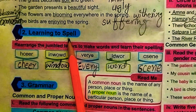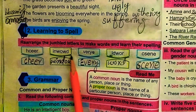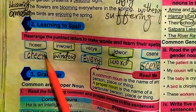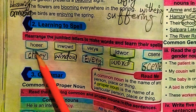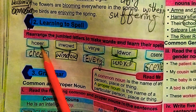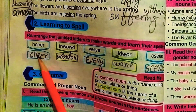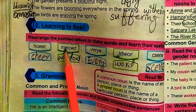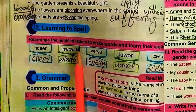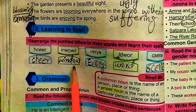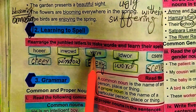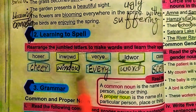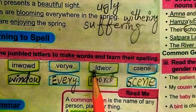In Learning to Spell, we have to rearrange the given letters to form a meaningful word. H-C-W-E-R rearranged makes 'cheer.' I-N-W-O-W-D rearranged makes 'window.' V-E-R-Y-E rearranged makes 'every.' C-S-E-N-E rearranged makes 'scene.'